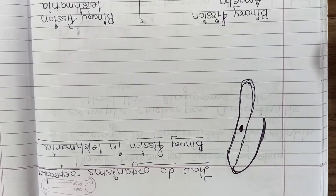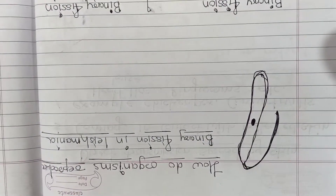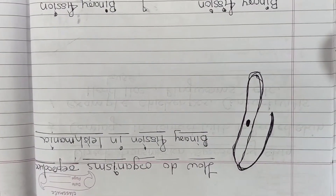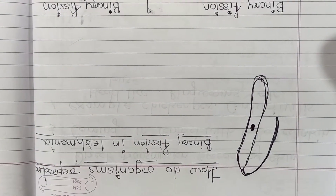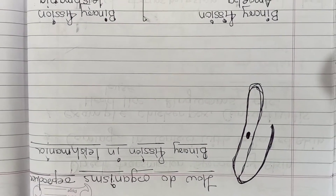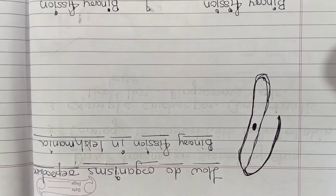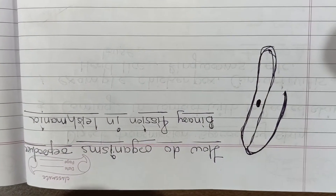Good morning dear students. Welcome back to our lesson on how do organisms reproduce. In yesterday's class we have seen binary fission in amoeba.